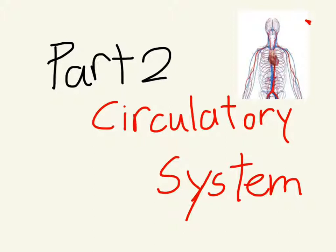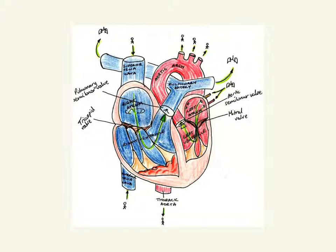A part of the circulatory system is the heart, the most important muscle in your body. The heart is as big as your fist. This is a model of the heart.